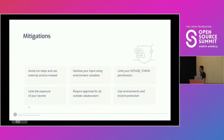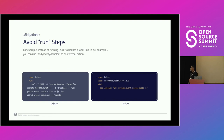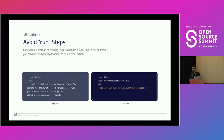So let's see how we can mitigate these issues. The first mitigation is to avoid run steps. Instead of issuing a shell script call to the GitHub API to update an issue label, use an external action — for example, the labeler external action — which does exactly the same thing: receives the label parameter, uses the GitHub token, and performs the operation. It is not susceptible to code injection. This mitigation isn't always possible, but whenever you can avoid a bash script in a run step, it's highly recommended.